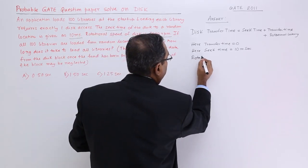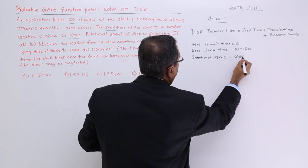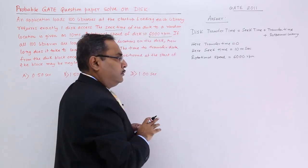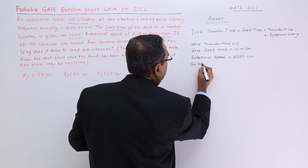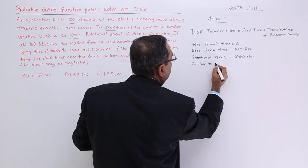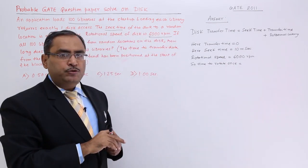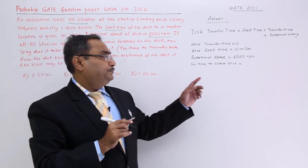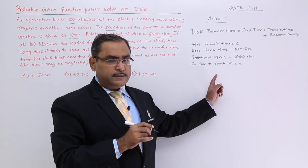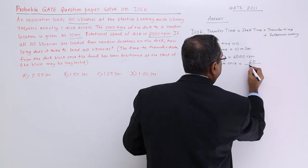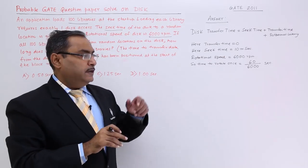Rotational speed given as 6000 rpm. I shall calculate time to rotate once. You see 6000 rotations for 60 seconds. So one rotation will be 60 by 6000. That is the figure that is 60 by 6000.